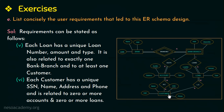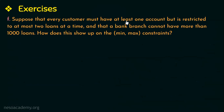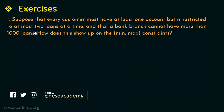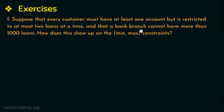The last question: suppose every customer must have at least one account but is restricted to at most two loans at a time, and a bank branch cannot have more than 1000 loans. How does this show up in the min-max constraints? Every customer must have at least one account, a customer is restricted to at most two loans, and a branch cannot have more than 1000 loans.